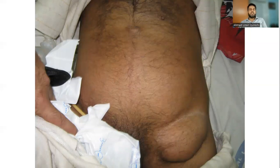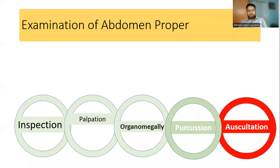An obstructed hernia is shown. All patients with an irreducible hernia should be considered as strangulated until proven otherwise, and this is a surgical emergency requiring prompt operation.